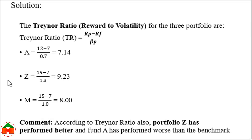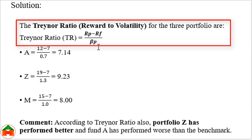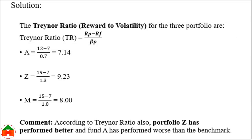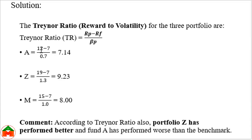The Treynor ratio is also known as the reward-to-volatility ratio. Its formula is very similar to the Sharpe ratio — we simply replace the denominator with beta p (systematic risk). The upper level remains (Rp minus Rf). The beta for Portfolio A is 0.7, for Portfolio Z is 1.3, and for the market index is 1.0. Calculating: Portfolio A = (12 minus 7) / 0.7, Portfolio Z = (19 minus 7) / 1.3, and Market = (15 minus 7) / 1.0.